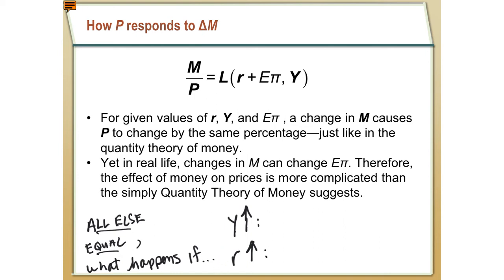If we assume the real interest rate, output, and expected inflation are all staying the same — for given values of these things — a change in M is going to have to be accompanied by an equivalent change in the price level to maintain the equilibrium condition. If R, Eπ, and Y are all fixed, the right-hand side is not changing. So if M goes up, then P is going to have to go up to ensure that money supply and money demand remain equivalent. However, that's not exactly how it works in real life, because changes in the money supply can influence expected inflation.